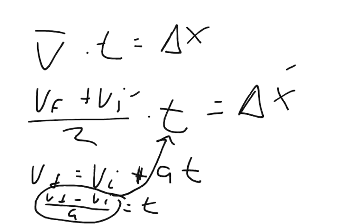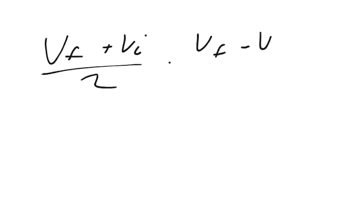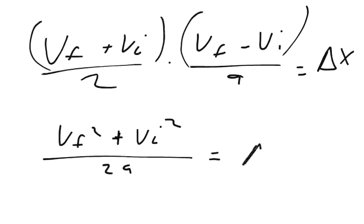So I've got average velocity times time equals my displacement. So I'm going to say average velocity times, instead of putting time there, I'm going to put what equals time, which is VF minus VI over A. And this should equal my displacement. Now what you might notice right away is we have a difference of two squares type of problem. So if I FOIL this out, what I'm going to get is VF squared plus VI squared. I'm going to get it over 2A. And this should equal my displacement.